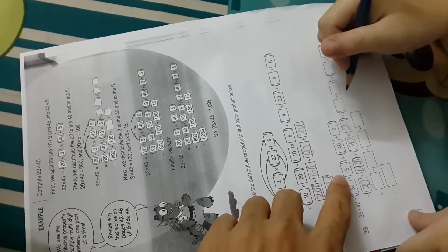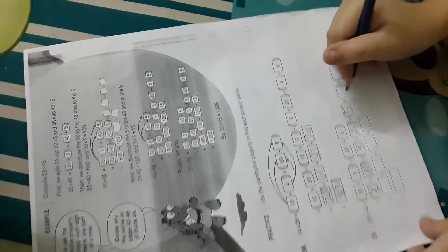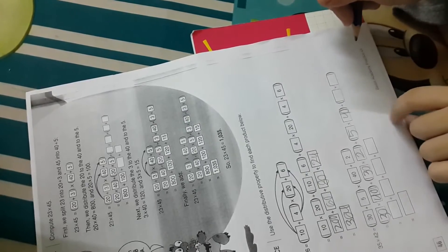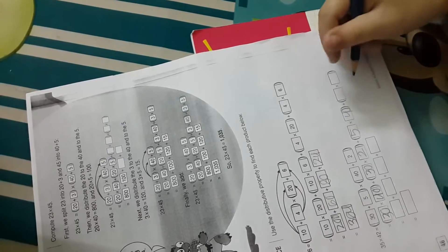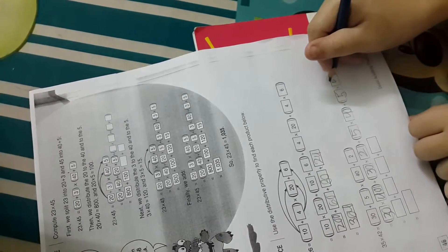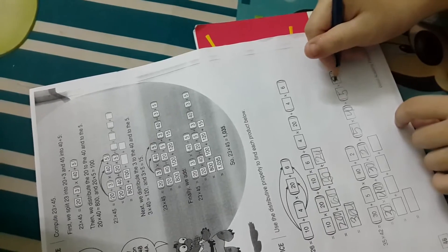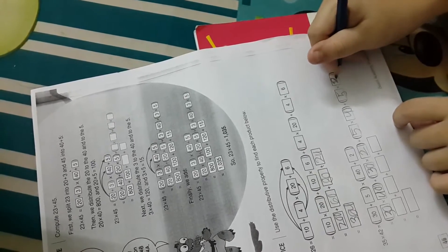Then you got the 5 over here. So what happens with that 5? So you're distributing the 5 times the 40. How do we spell a 2? How do we write a 2? There you go.